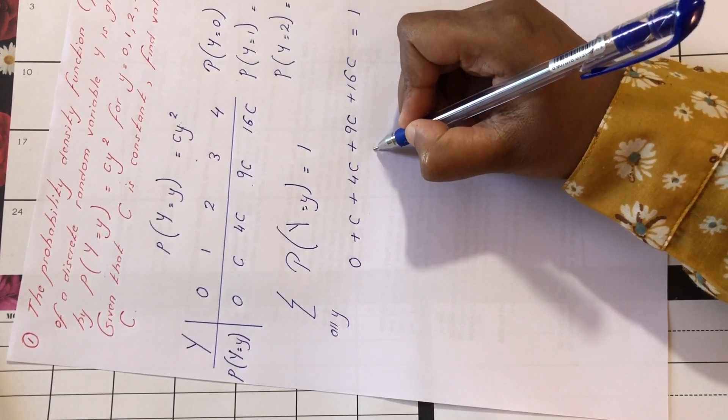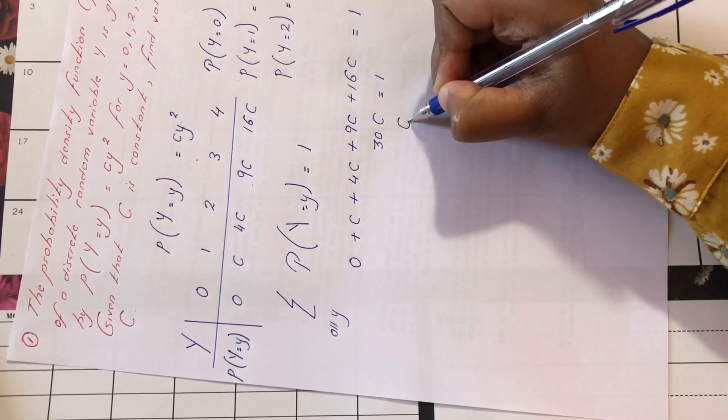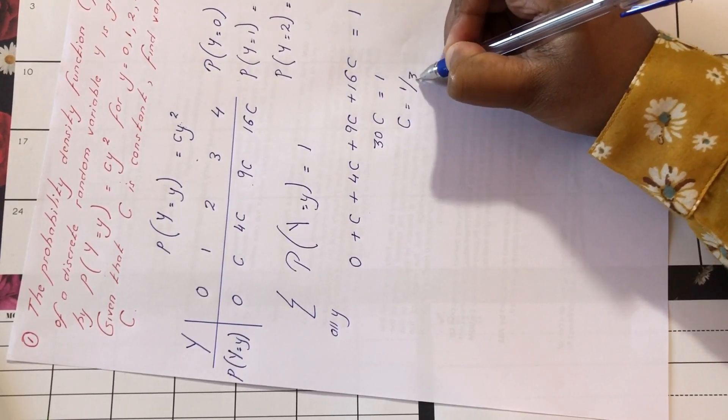So we can add them. We are going to have 30c is equal to 1. C is equal to 1 over 30.